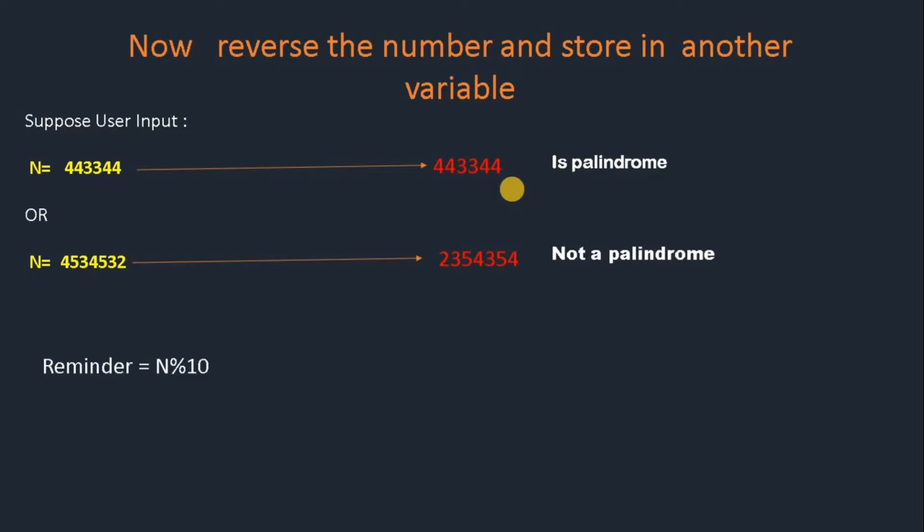What is the main logic to understand how to reverse the number? First, you should know that remainder = n % 10. What does n % 10 do? n % 10 gives the remainder. When we divide this number by 10, the remainder will simply be 4.